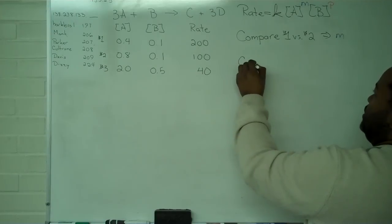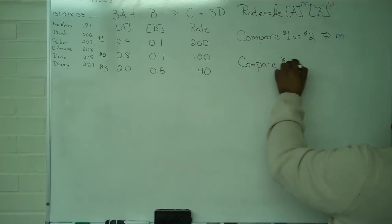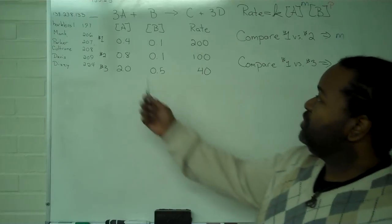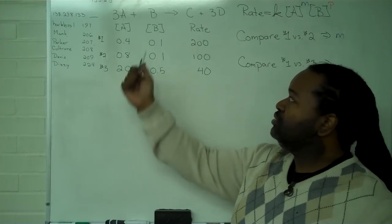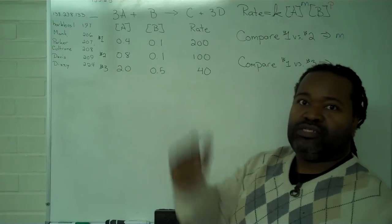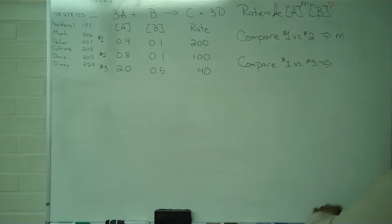Once we have that information, we can make a second comparison of number one versus number three. Because we know the effect of this change, when we observe this change we'll be able to determine what that does to the rate, and that information will allow us to solve for P.